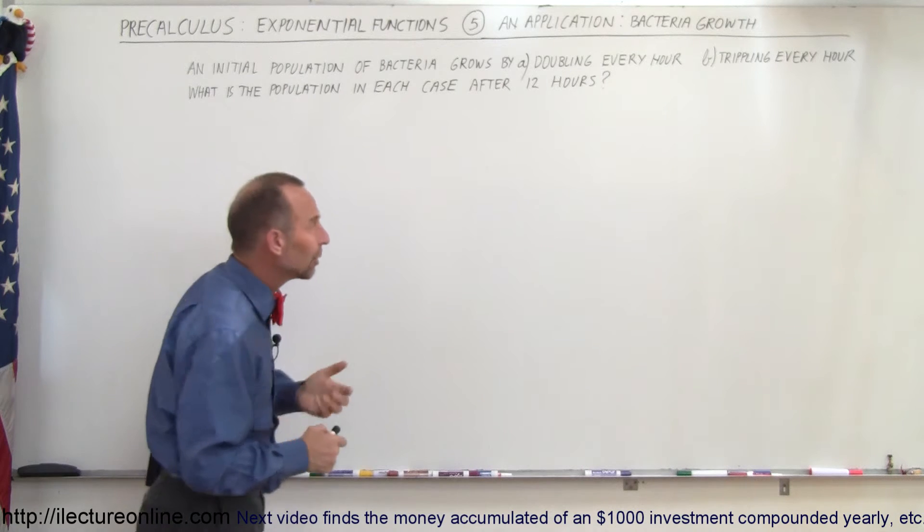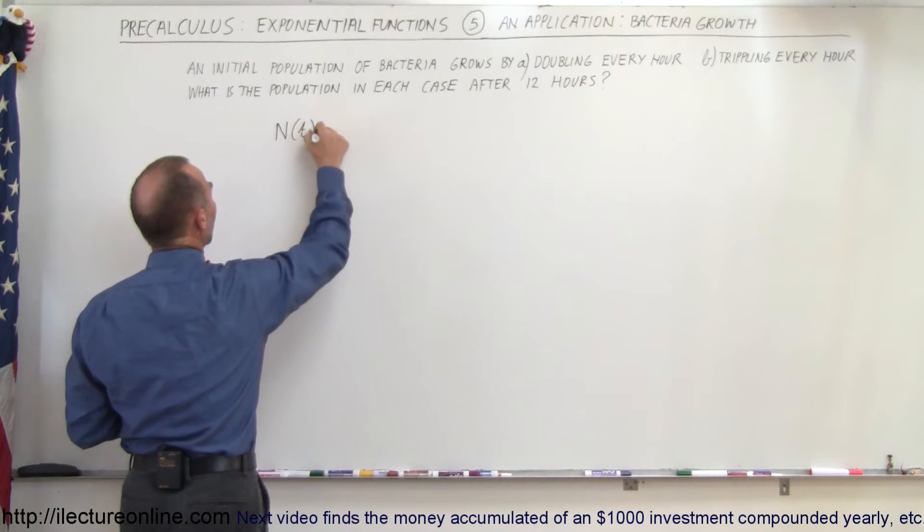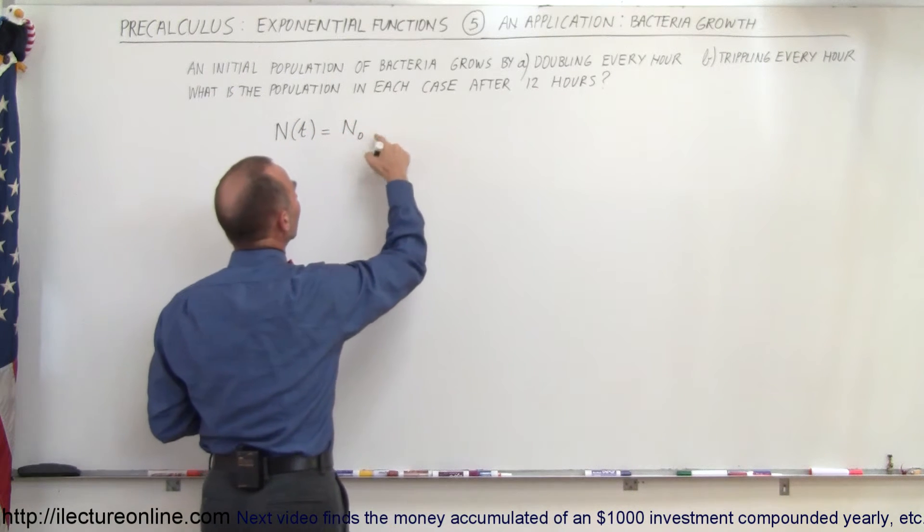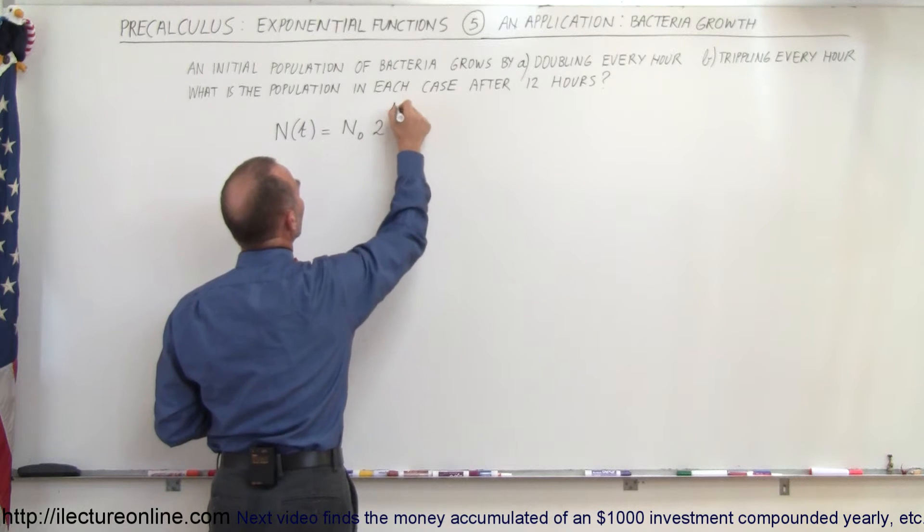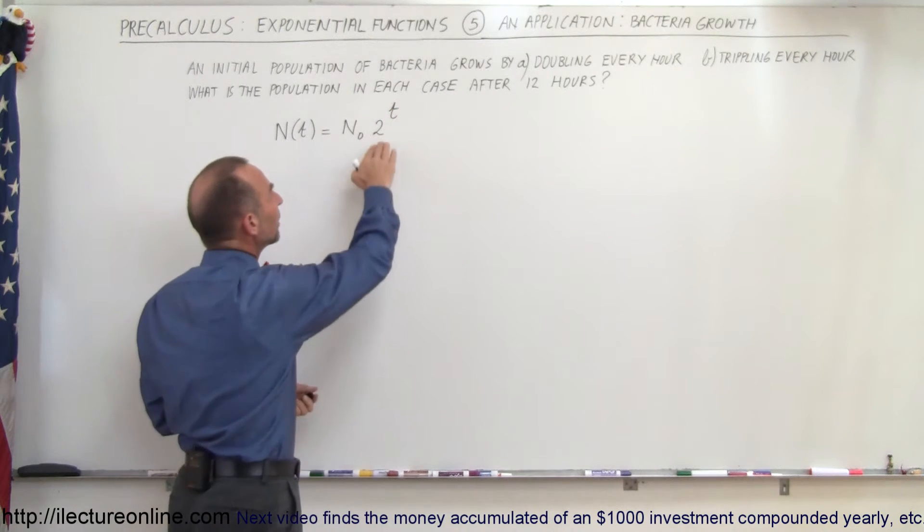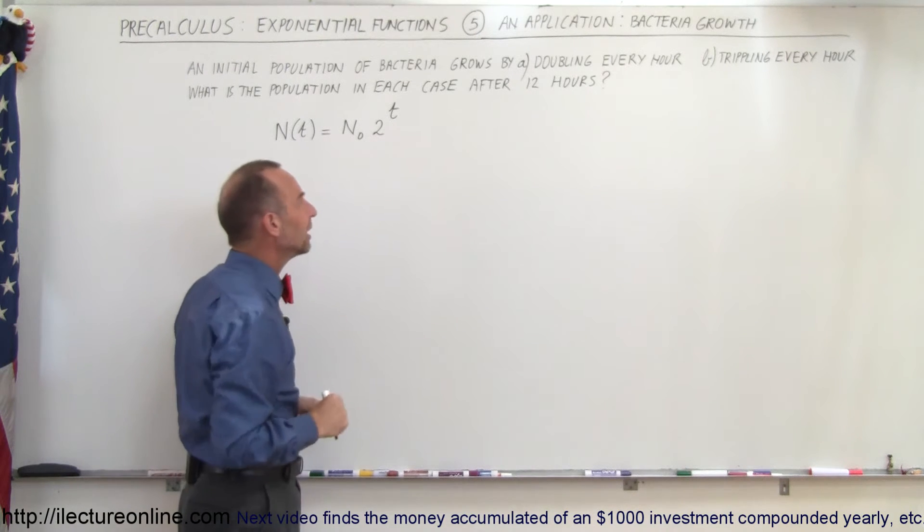For the case where we double every hour, the equation would be as follows. The number as a function of time, N(t), equals the initial number N₀ times 2 raised to the t power. t is the number of hours and 2 is the base, because we're dealing with the population doubling every hour.